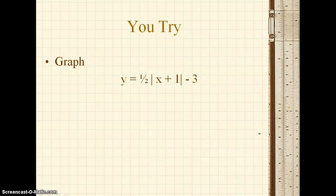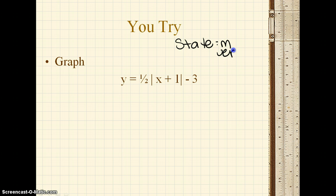So the example you're going to try is y is equal to 1 half times the absolute value of x plus 1 minus 3. Again, start by stating your slope, your vertex, and direction.